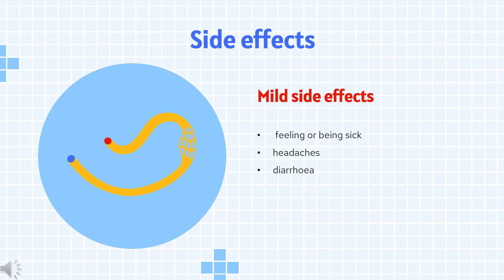Side effects. The main side effects of dipyridamol are feeling or being sick, headaches, and diarrhea. You can drink alcohol with dipyridamol; however, do not drink too much while taking this medicine, as it can make you dizzy or lightheaded.